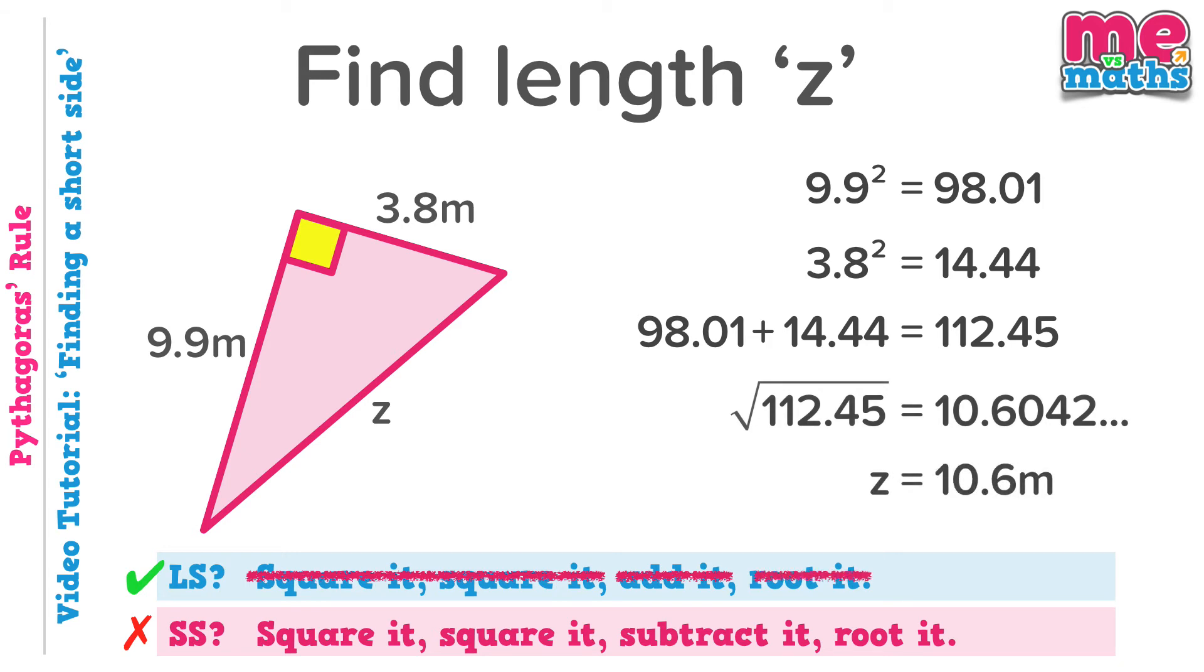And we find that Z, the hypotenuse, should be the longest side, and it is 10.6 metres.